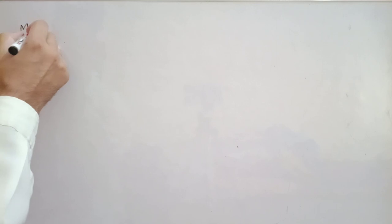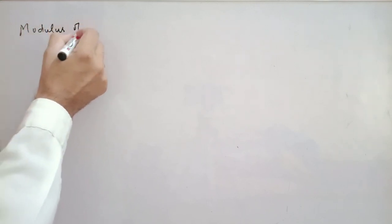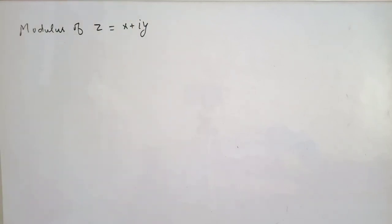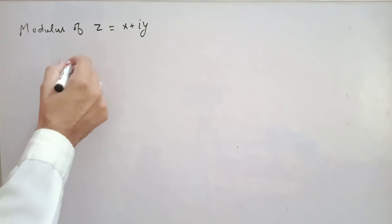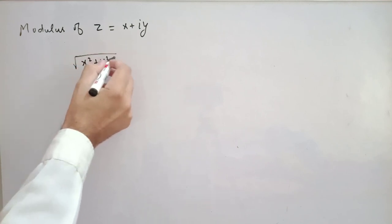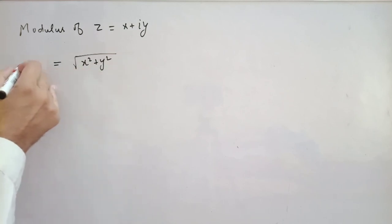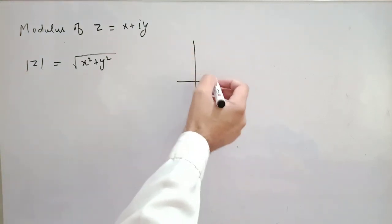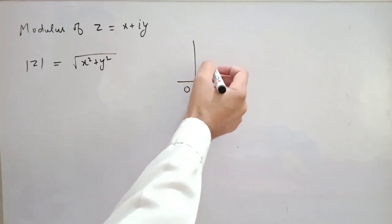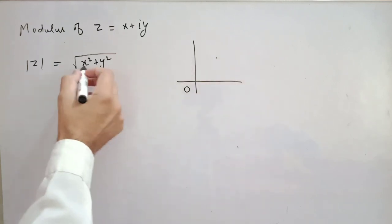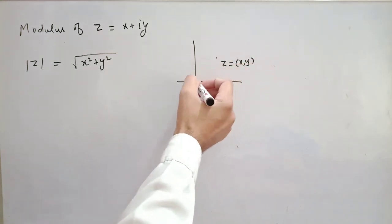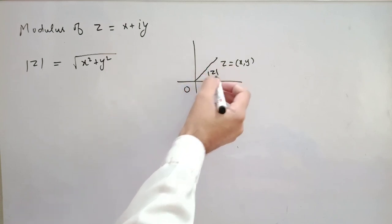The next definition is modulus. The modulus of a complex number z = x + iy is the non-negative real number √(x² + y²), denoted |z|. Geometrically, this is the distance of the point z = (x, y) from the origin in the complex plane.